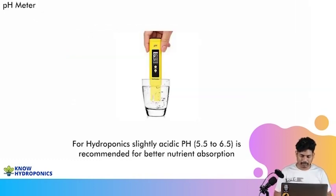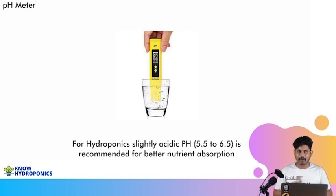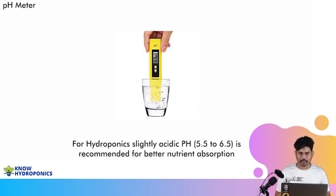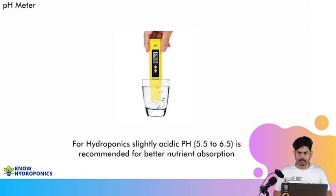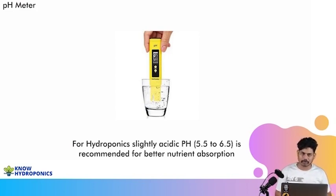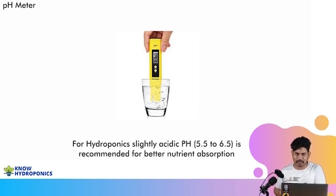Next, we talk about the pH meter. A pH meter is used to understand the current pH of the water and what steps we need to take to keep it under control. Generally, in India, the water we get is a little bit on the alkaline side — there are a lot of salt deposits, minerals, and chemicals already present. Drinking water or any general water is almost at a pH of 6.5 to 7.5, sometimes 8.